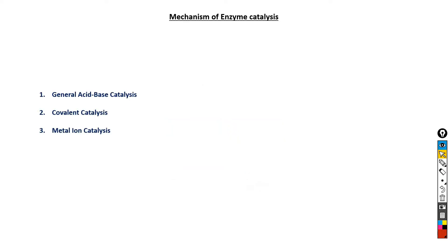In most enzymes, binding energy is used to form the enzyme-substrate complex, and this is just one of several contributors to the overall catalytic mechanism. Once a substrate is bound to an enzyme, the properly positioned catalytic functional groups help in the cleavage and formation of bonds. Among these, the three most important mechanisms of enzyme catalysis are general acid-base catalysis, covalent catalysis, and metal ion catalysis.